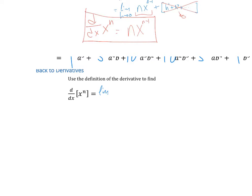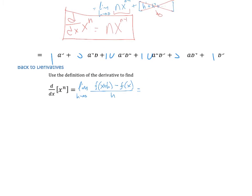Using the limit definition, we want the limit as h goes to zero of f(x+h) minus f(x), all over h. It's always nice to write that down first so we remember where we're going. The function itself is x to the n, so we have the limit as h goes to zero of x plus h to the nth power minus x to the n, all over h.